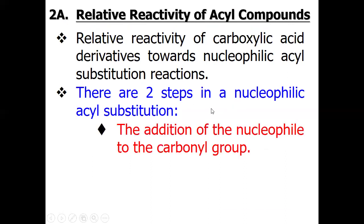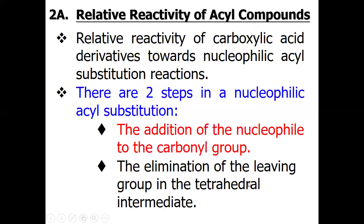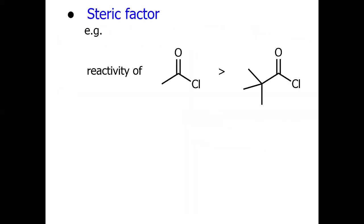As already mentioned, the first step is the addition of the nucleophile to the carbonyl group, and the second step is the elimination of the leaving group via the tetrahedral intermediate. This acyl substitution also depends on some factors — steric and electronic — that may increase or decrease the reactivity.